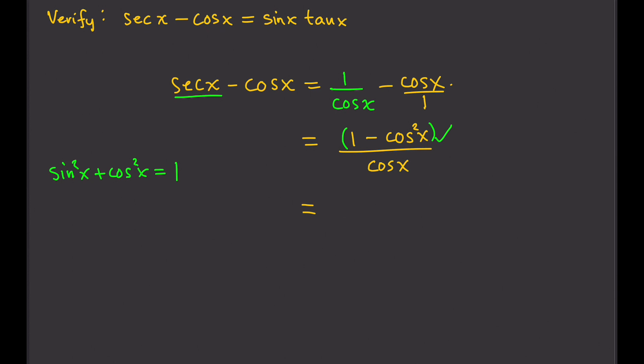So if we subtract cosine squared x both sides, it cancels out. So we're left with sine squared x equals 1 minus cosine squared x. And that's exactly what we have here. So we can write this as sine squared x divided by cosine x.